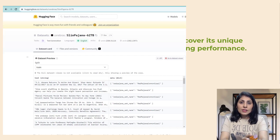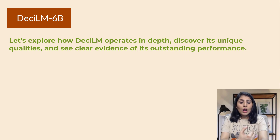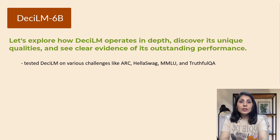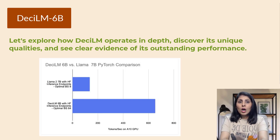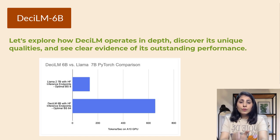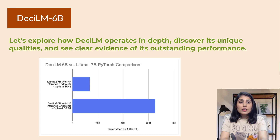For performance analysis, Desi tested DesiLM on various benchmarks like ARC, HellaSwag, MMLU, and TruthfulQA. Here is the table and graph showing how DesiLM performs compared to other models like LLaMA2 7B, Falcon 7B, and MPT 7B. What's interesting is that even though DesiLM has fewer parameters, it still performs as well as or sometimes even better than LLaMA2 7B, which is considered one of the best models in the field. DesiLM achieves this with less computational resources, showing it's an efficient and capable model.